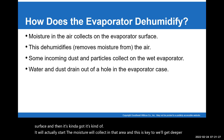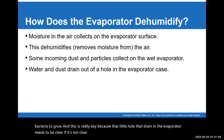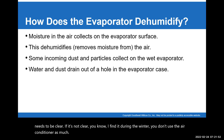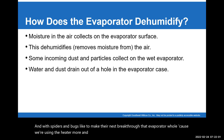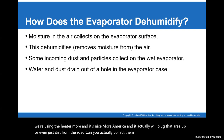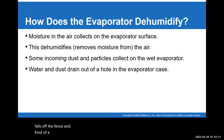If moisture is not allowed to drain out, it's going to cause bacteria to grow. That drain in the evaporator needs to be clear. During winter when you don't use the air conditioner as much, spiders and bugs can make their nests through the evaporator drain hole because we're using the heater more — it's a nice warm area. Even just dirt from the road can collect there too. We take the humidity from the evaporator and it falls off the fins as little droplets, draining outside the vehicle.